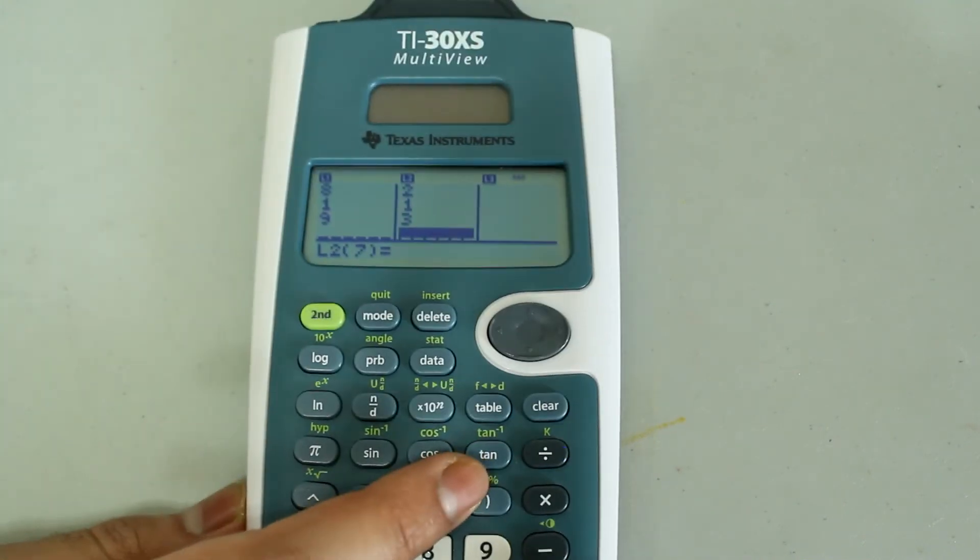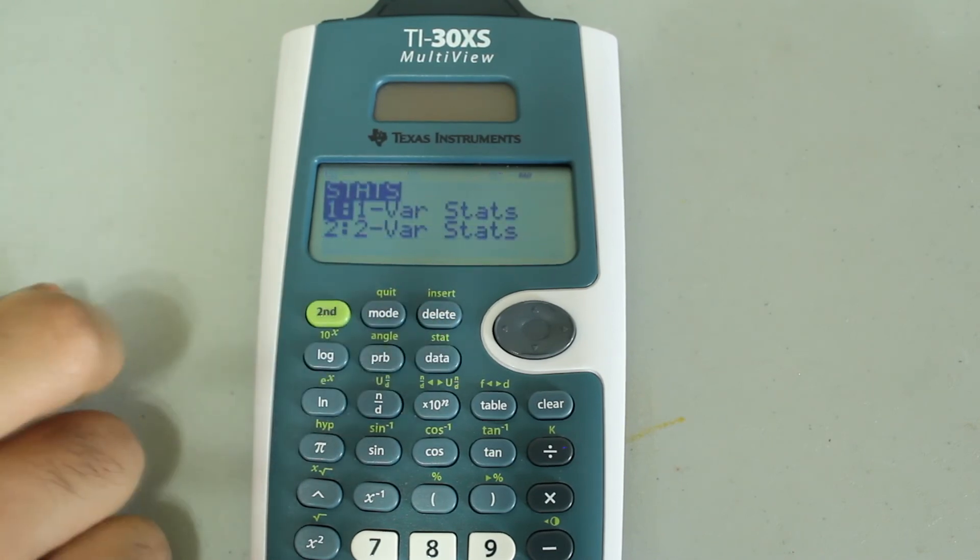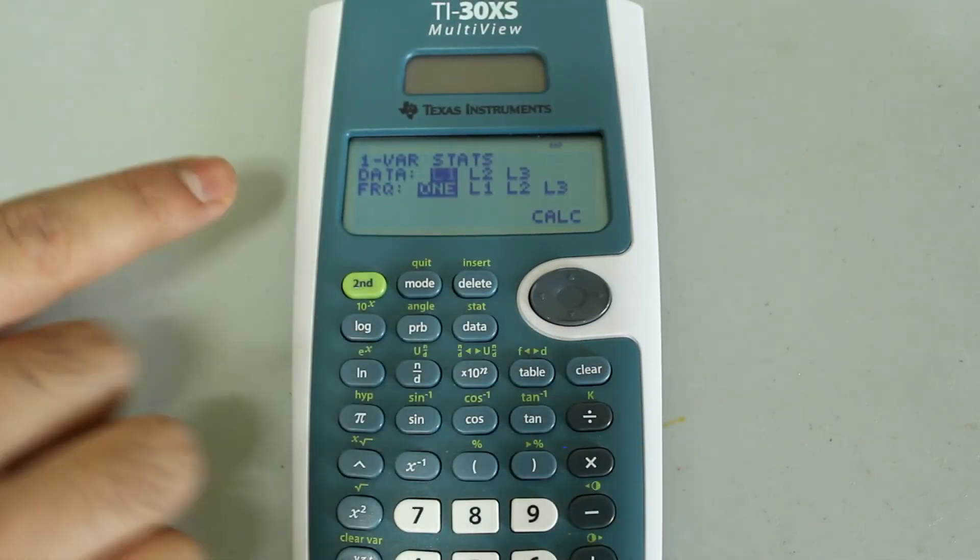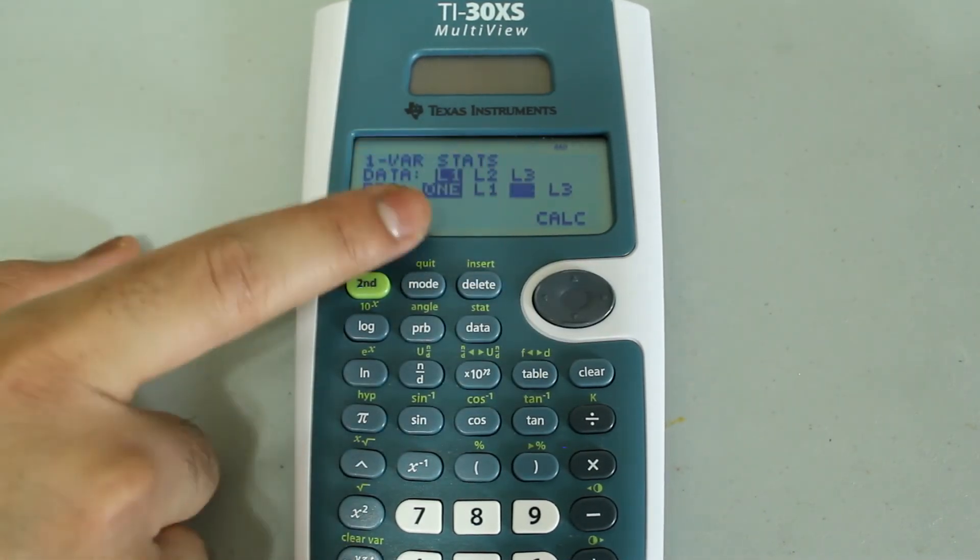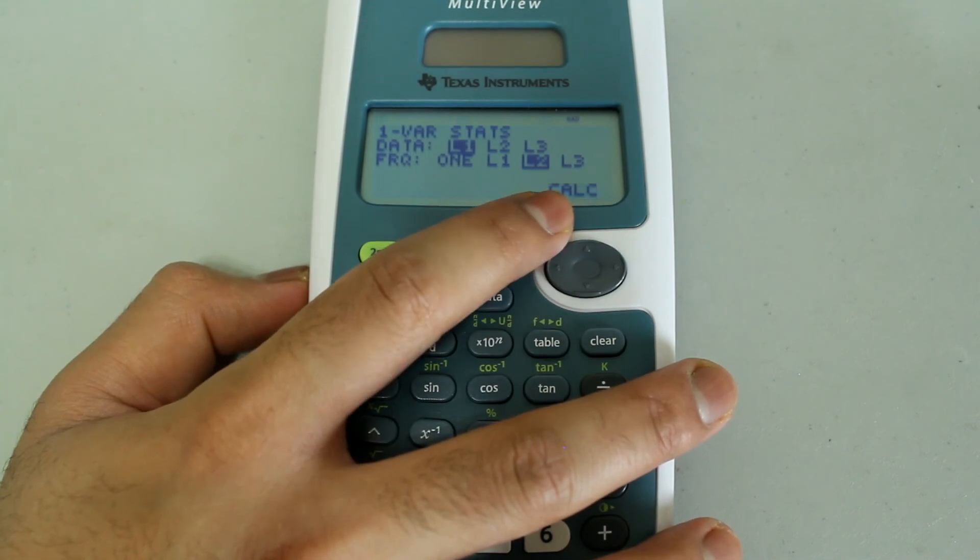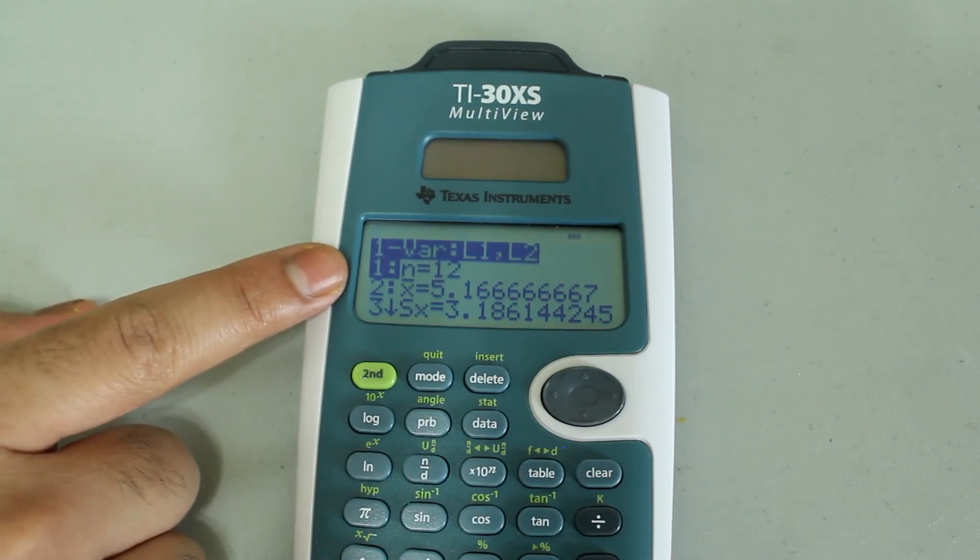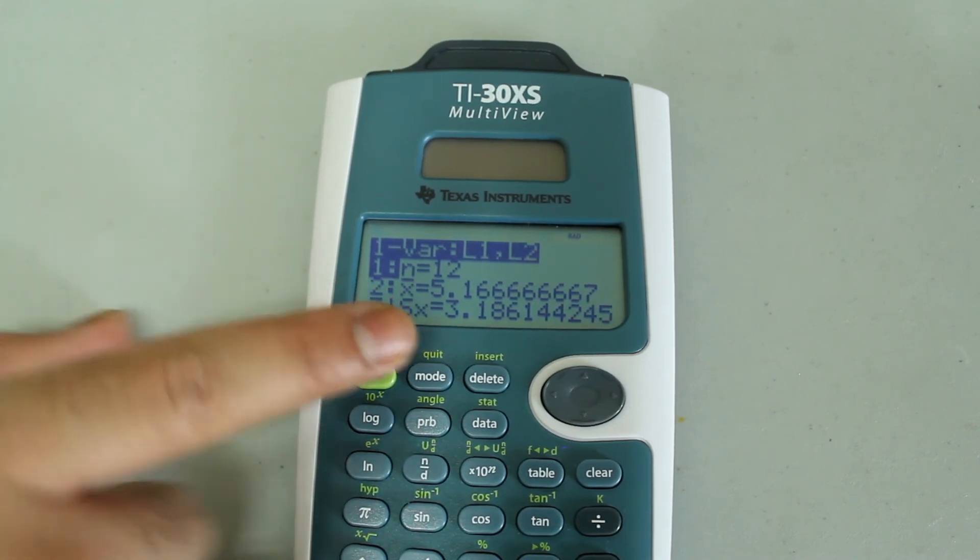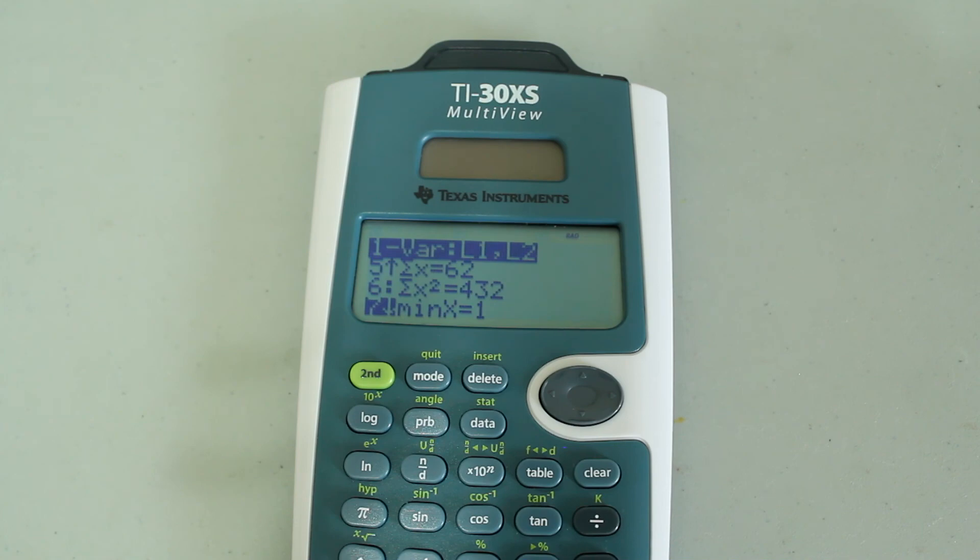Now, I'm going to do the calculation just as before. So I'm going to type in 2nd, and then the data button. And once again, I'm going to select 1 var stats, press enter to select it. And my data is still in L1, but now my frequency is not 1. My frequency is listed in L2. So I'm going to arrow over there and press enter. And then once the cursor is on calculate, press enter. And now I get the information that I wanted. N is equal to 12 because I have 12 pieces of data. And then my arithmetic mean followed by the sample standard deviation, population standard deviation, and so on.